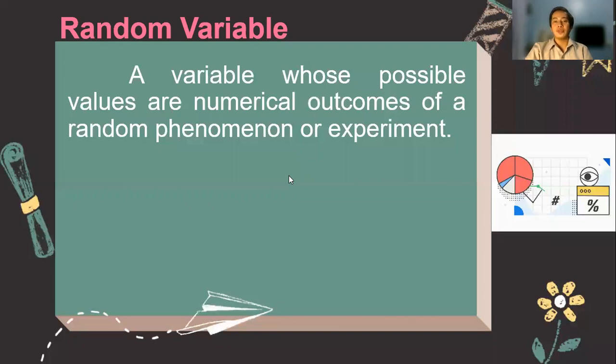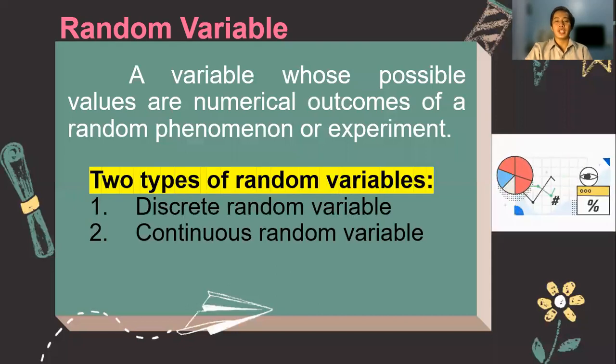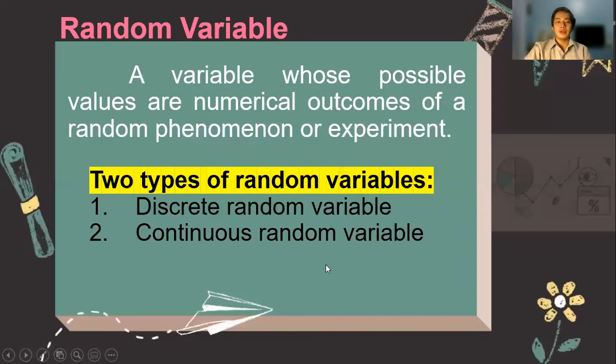So don't get confused with the conditional probability that you have discussed during your grade 10, because a random variable is different from what you have discussed during your junior high school statistics and probability. So there are two types of random variables. The first one is what we call the discrete random variable. Secondly, we have the continuous random variable.